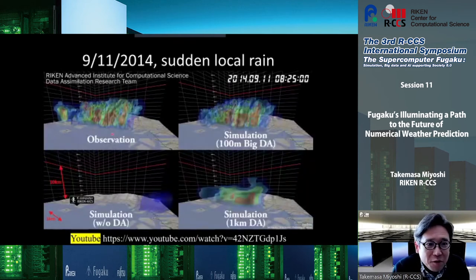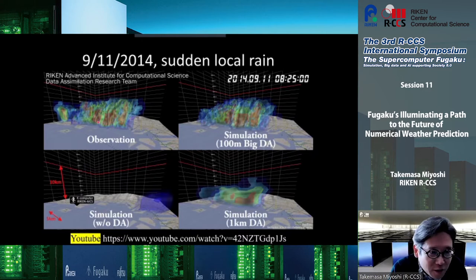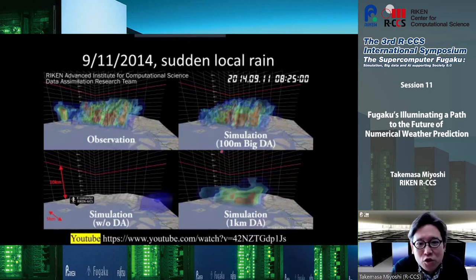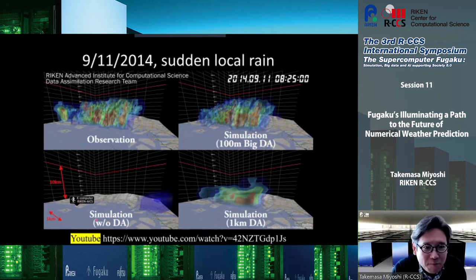We have the observation at a scale of about 15 to 20 kilometers wide and about 5 kilometers in the other direction, with the red line showing 10 kilometers in height. We have a very fine structure, and the observation is every 30 seconds. We run a 100-meter mesh simulation and assimilate all of these observation data every 30 seconds. Without data assimilation — which is the regular weather forecasting system — we have basically no predictability for this type of event.